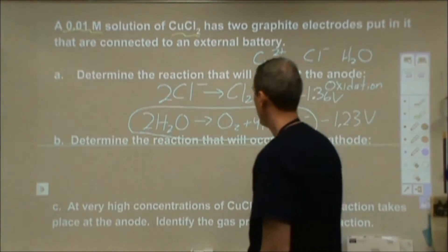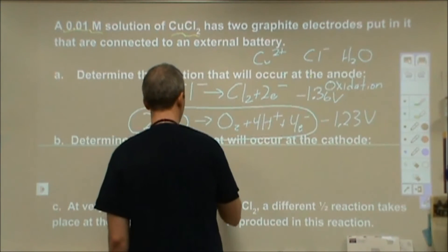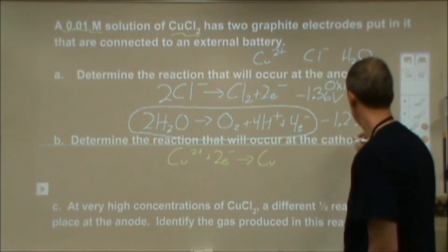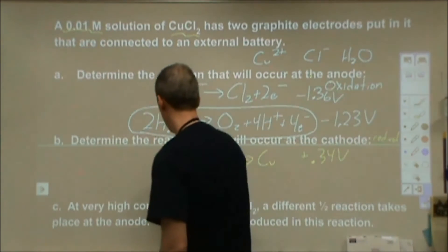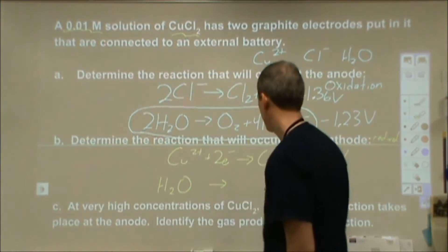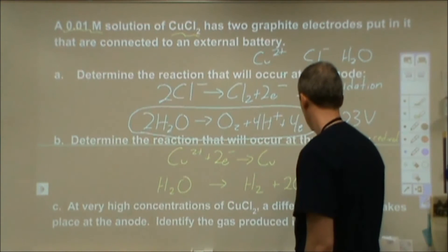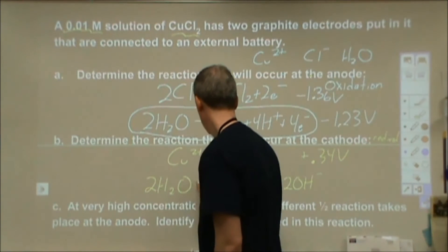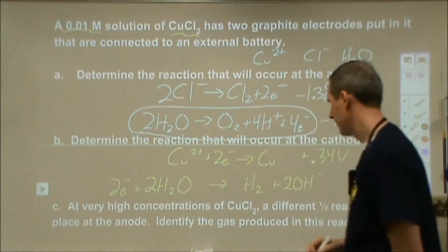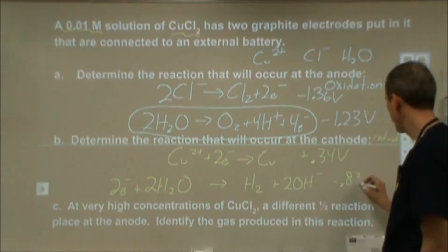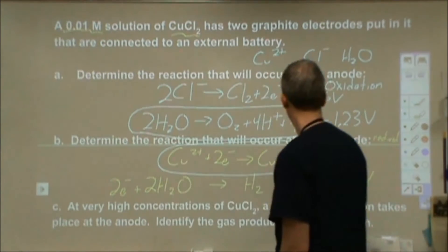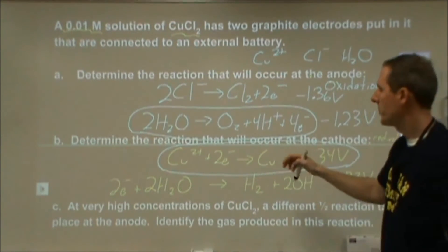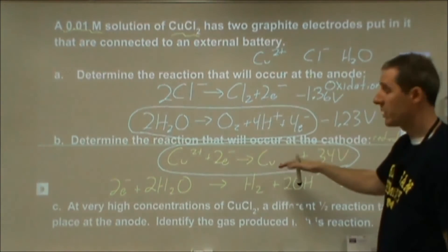At the cathode, we again have to compare reactions, going back to the copper 2-plus reaction. One reaction is copper 2-plus being reduced at the cathode — that has a voltage of positive 0.34 volts. The other reaction is water turning into hydrogen gas, which has a voltage of negative 0.83 volts. It's not even close — our more preferable reaction at the cathode would be the copper reduction.